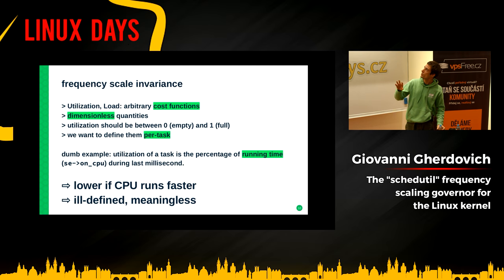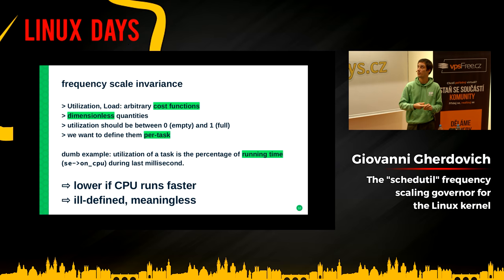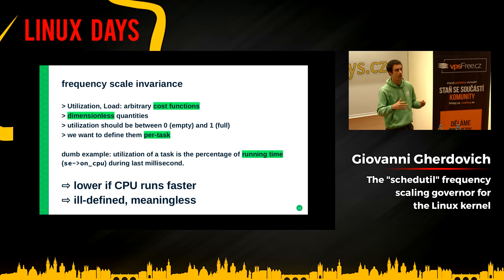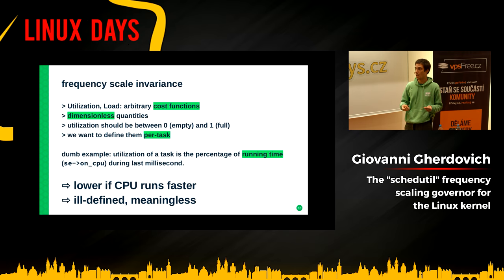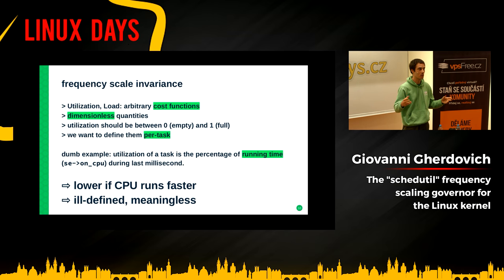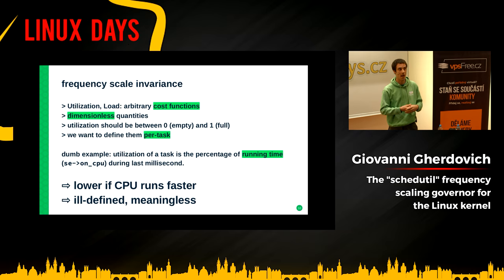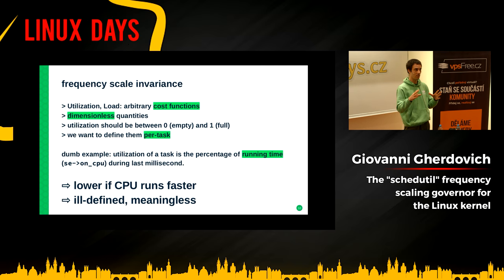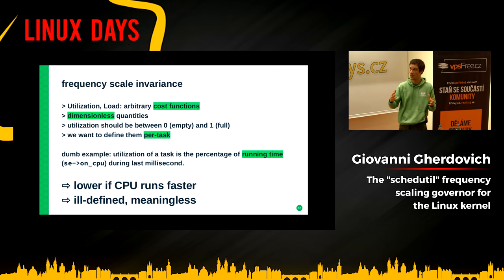To better describe the frequency scale invariance problem, let's reflect on what utilization and load are. They are two quantities calculated by the operating system, but they are not physical quantities defined by nature such as length or pressure. They are just cost functions, and we are free to define them as best fits our needs — to model the activity of the system.